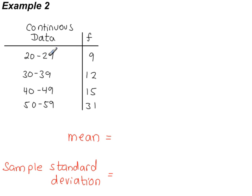If you increase the 29 to 29.5 and you decrease the 30 to 29.5, so you're adding a half here, you're subtracting a half here, now there is no gap between these two. And for continuous data, you should never have gaps in between the classes.